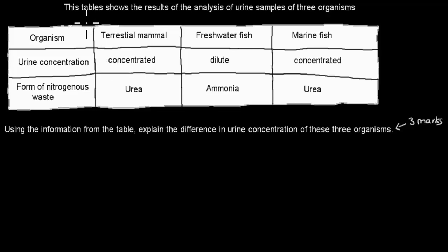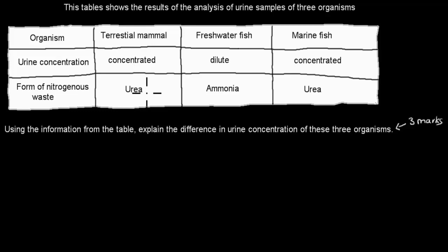The question says: this table shows the results of the analysis of urine samples of three organisms — terrestrial mammal, freshwater fish, and marine fish — showing urine concentration and the form of nitrogenous waste. Terrestrial mammals produce concentrated urine and their nitrogenous waste is urea. Freshwater fish produce dilute urine and their form is ammonia. Marine fish produce concentrated urine and their form is urea. Using the information from the table, explain the difference in urine concentrations of these three organisms. That's worth three marks.